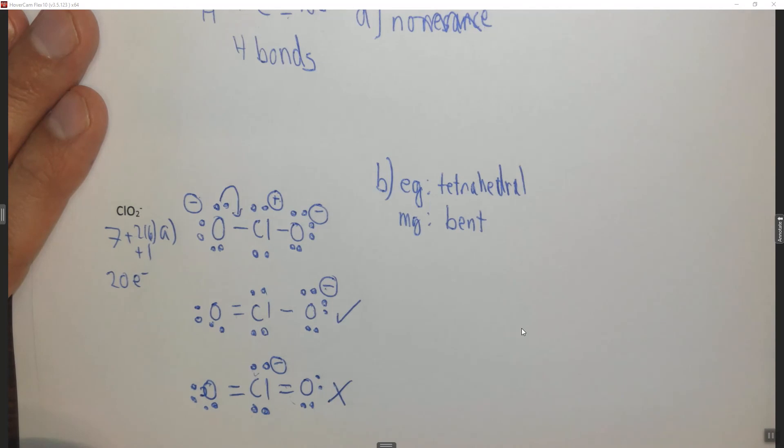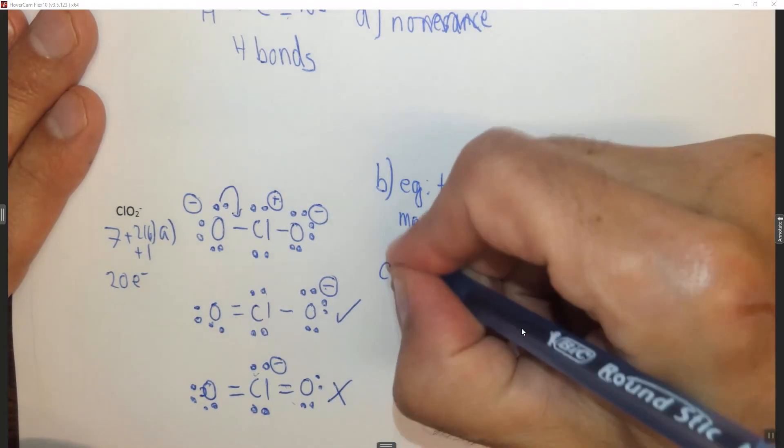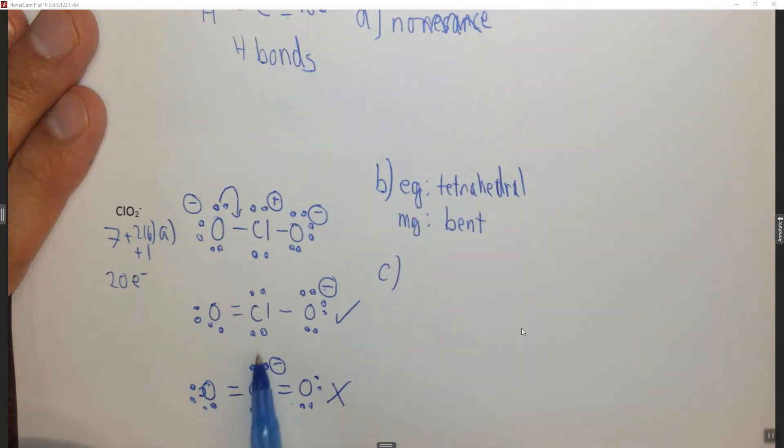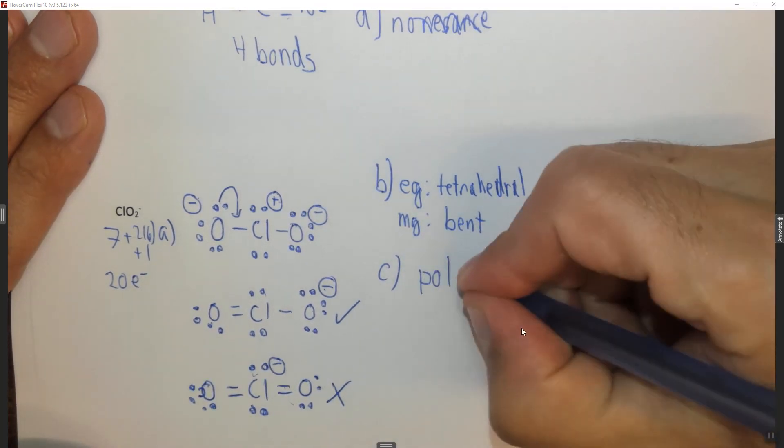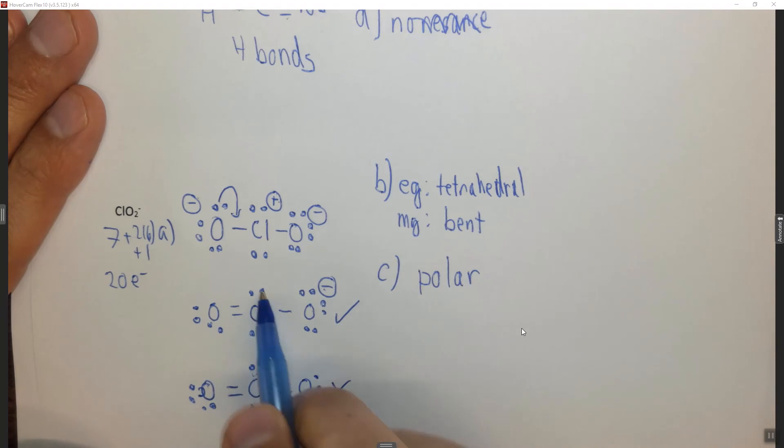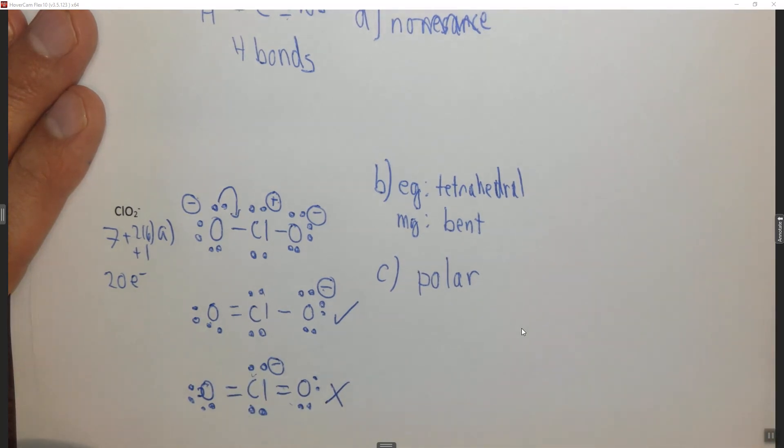C, give the polarity of the atom or ion. In this case, we have two lone pairs and two oxygens, so this would be polar. Not all domains are the same. Two domains are lone pairs and two domains are oxygens, so it's polar in a similar way that water is polar.